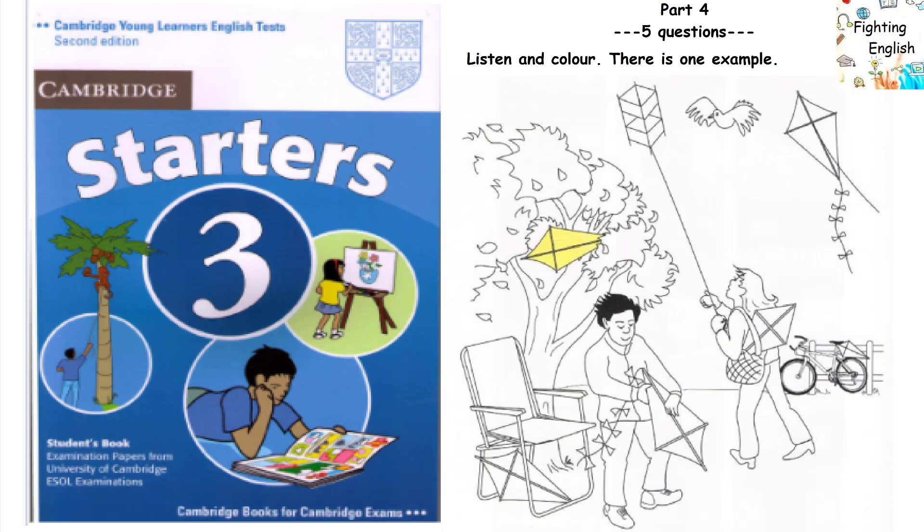1. Now look at the boy. He's got a kite in his hand. That's right. Can you colour it red? Colour the kite red? The kite in the boy's hand? Yes, please.